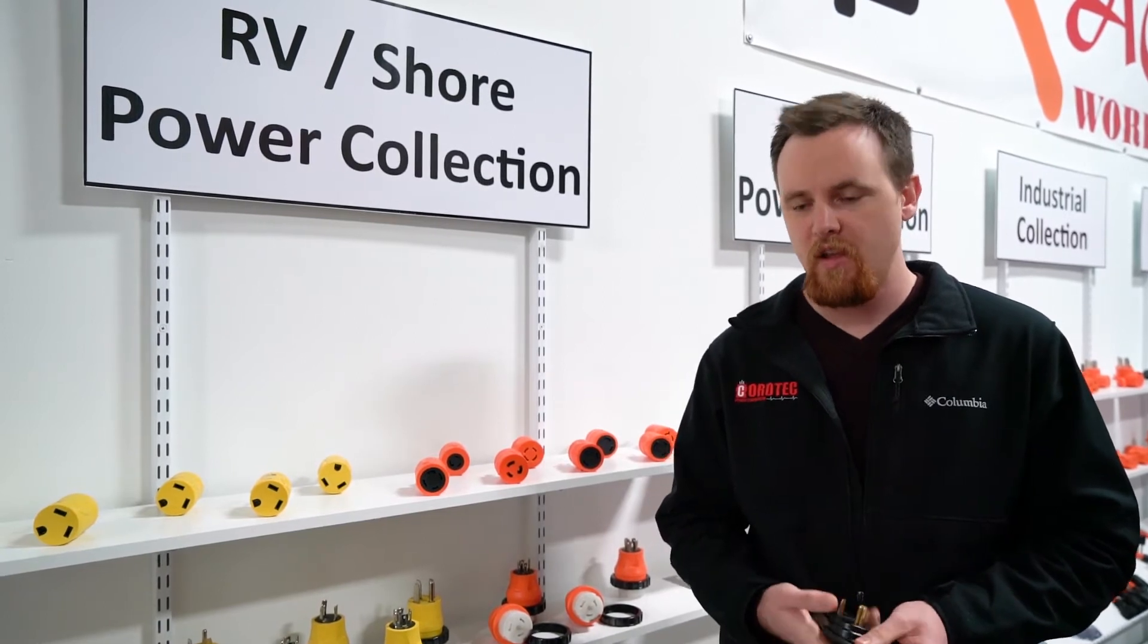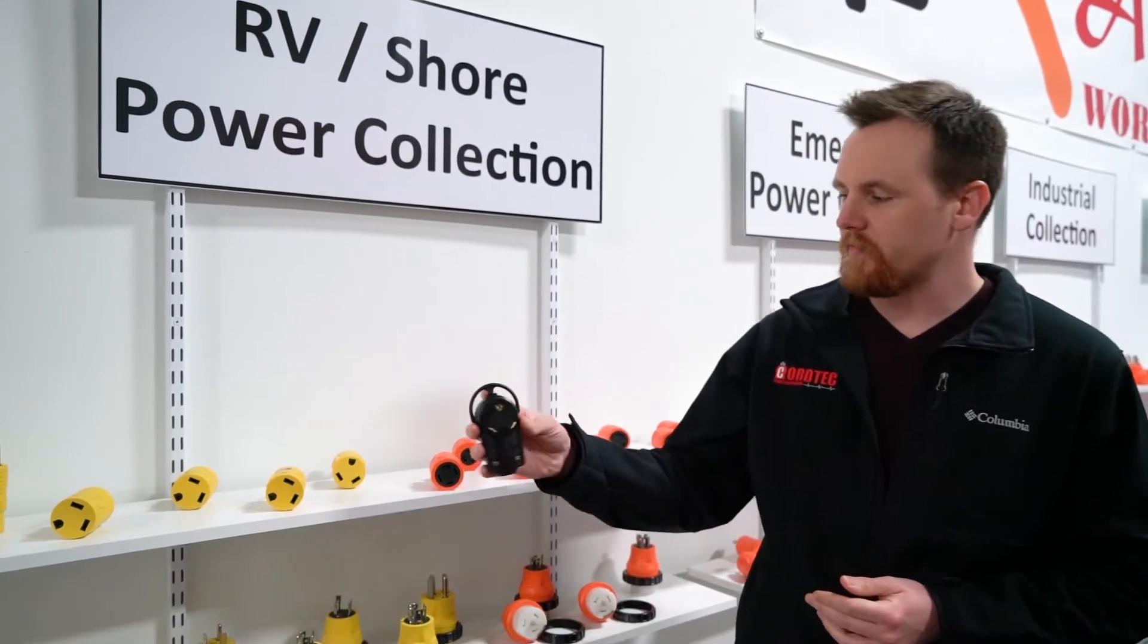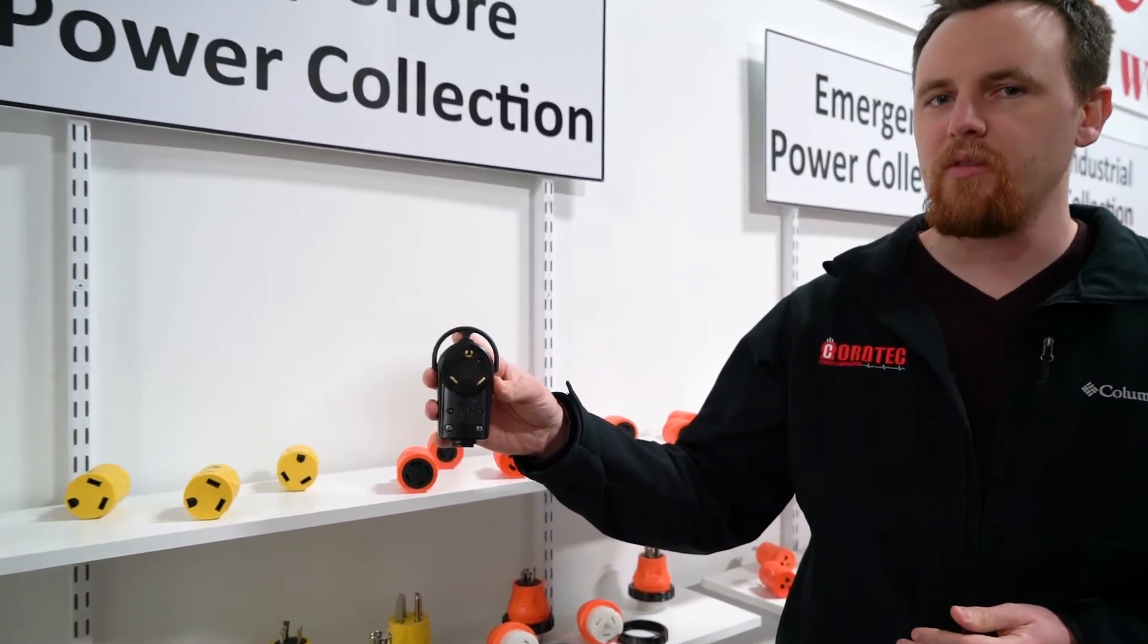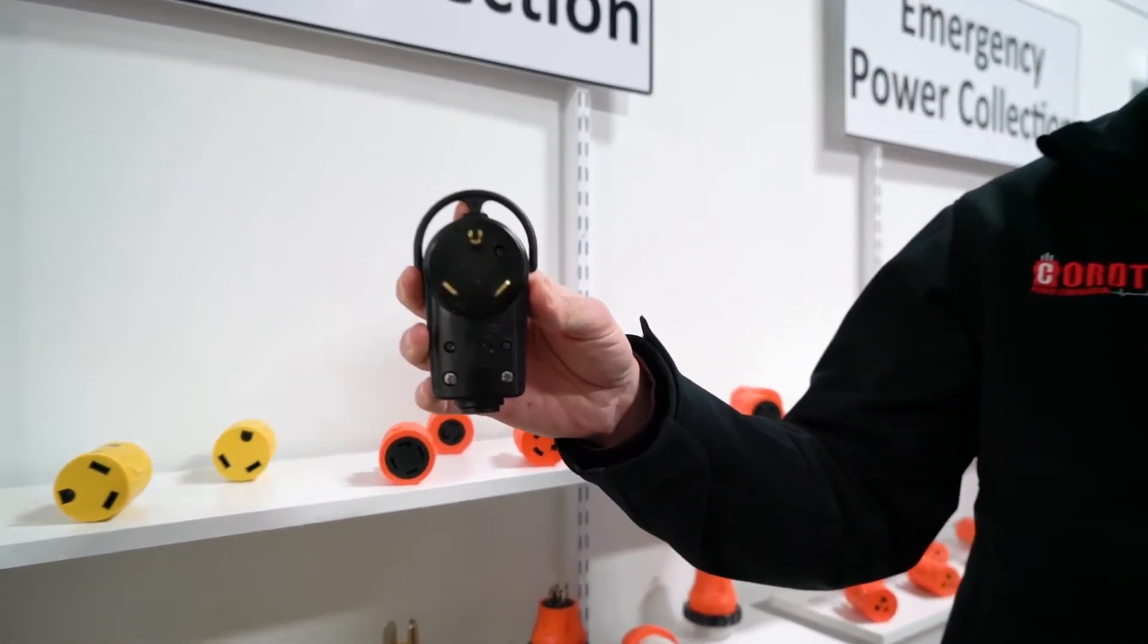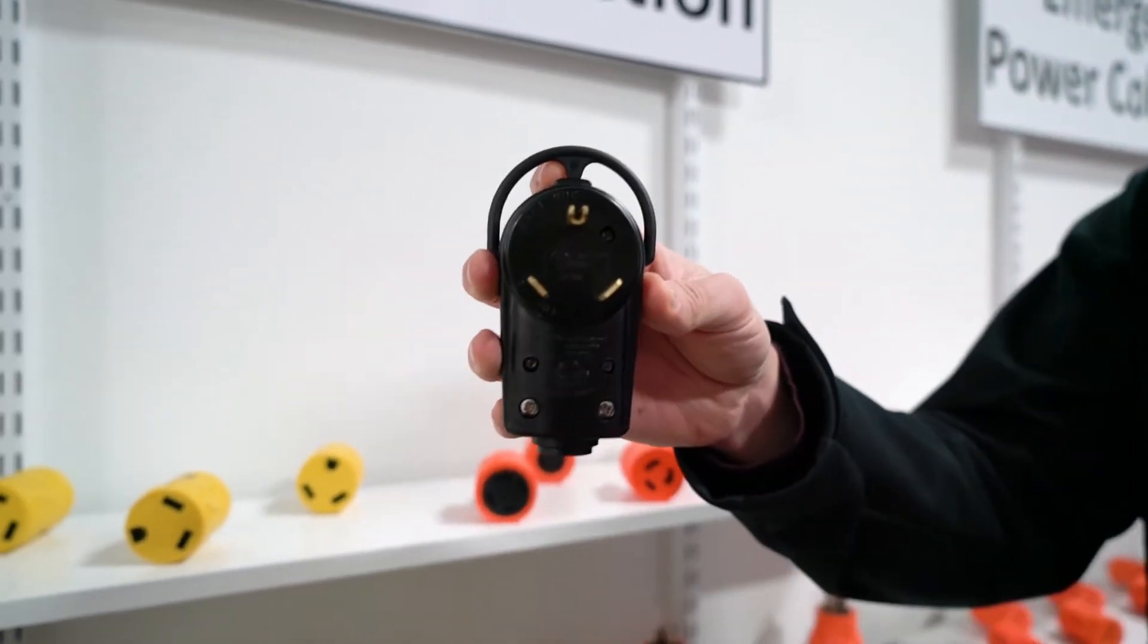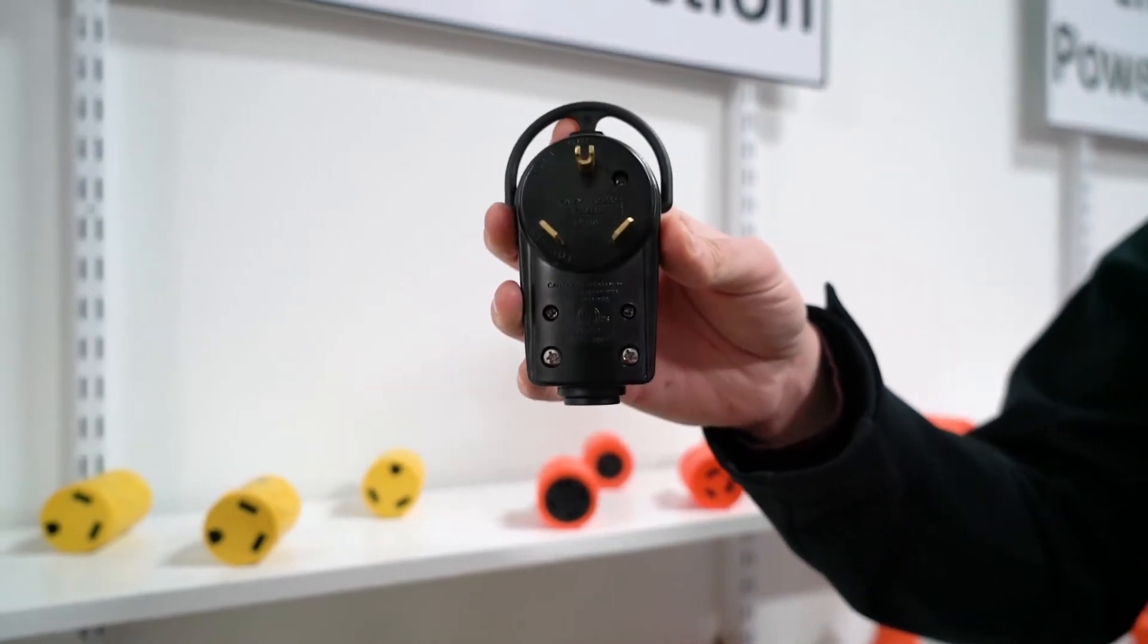This one will be for the 30 amp RVs that you might own. 30 amp RVs will usually have this kind of plug right here. It's a NEMA TT30 plug. Of course it will have the cable and everything else attached, but this is just easier to show you.